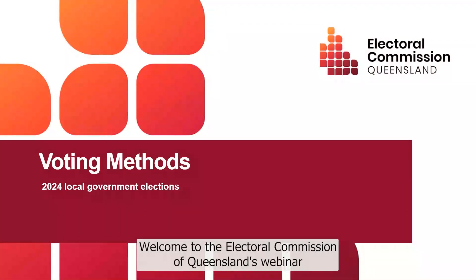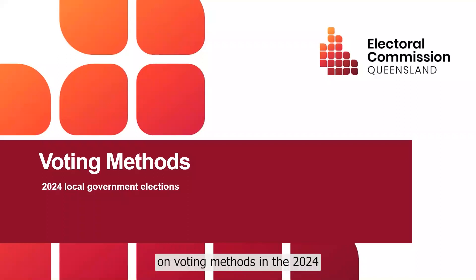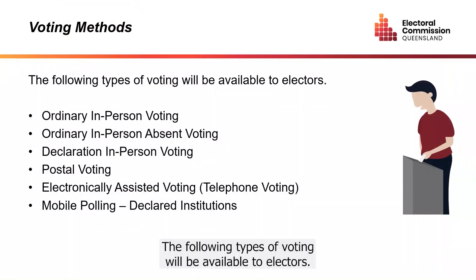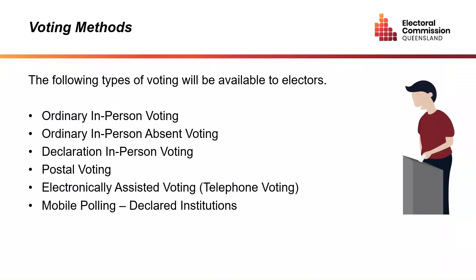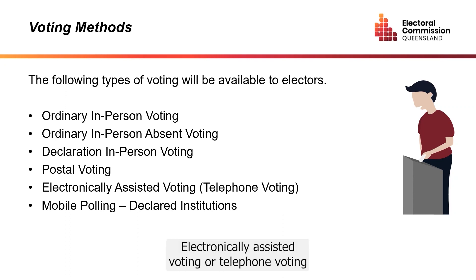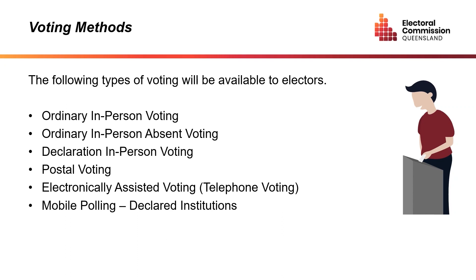Welcome to the Electoral Commission of Queensland's webinar on voting methods in the 2024 local government elections. The following types of voting will be available to electors: ordinary in-person voting, ordinary in-person absent voting, declaration in-person voting, postal voting, electronically assisted voting or telephone voting, and mobile polling in declared institutions.